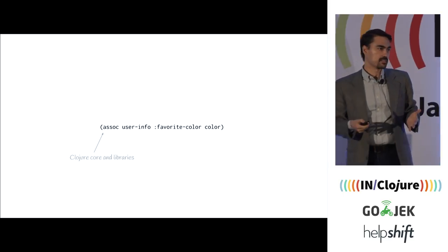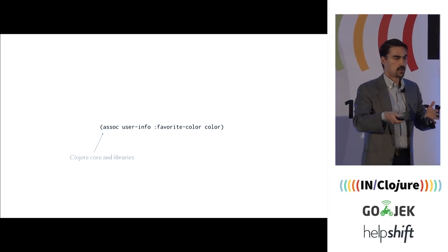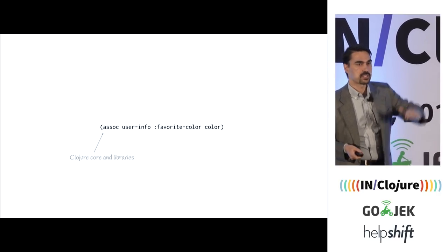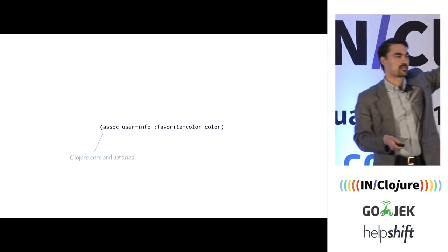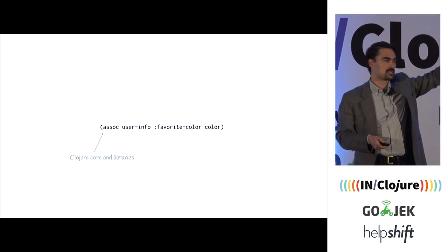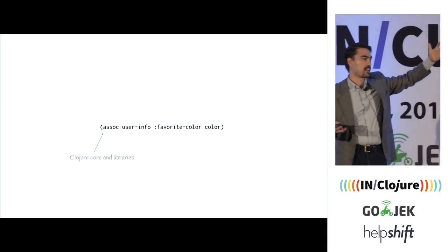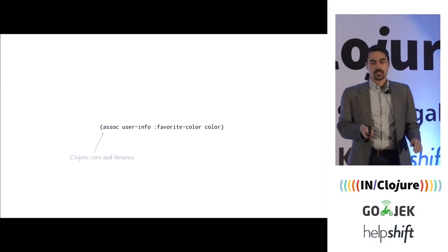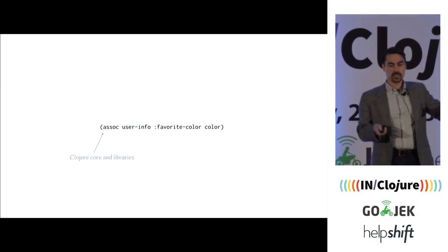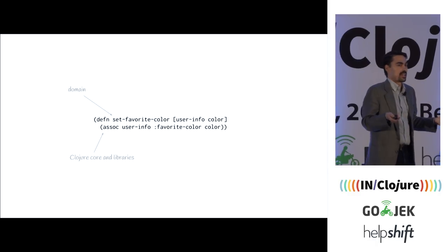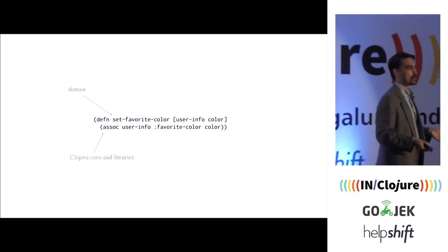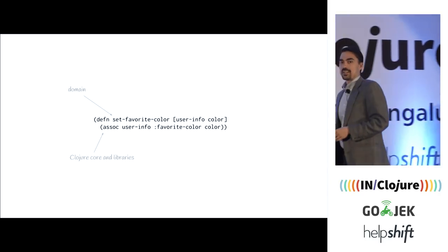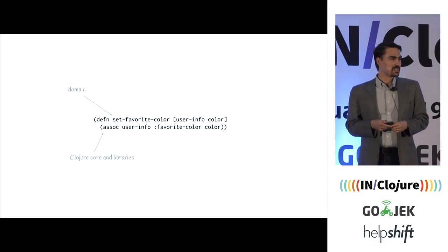Here's how we could fix this. Take that same line of code — it's all just Clojure core libraries. How do you turn it into something at a higher layer of meaning? Not a higher level of abstraction — it's actually less abstract. assoc is very abstract; it's any key-value pair. We want just "favorite color." The only thing we can do: we give this operation a name. We define a function. And there we have it.